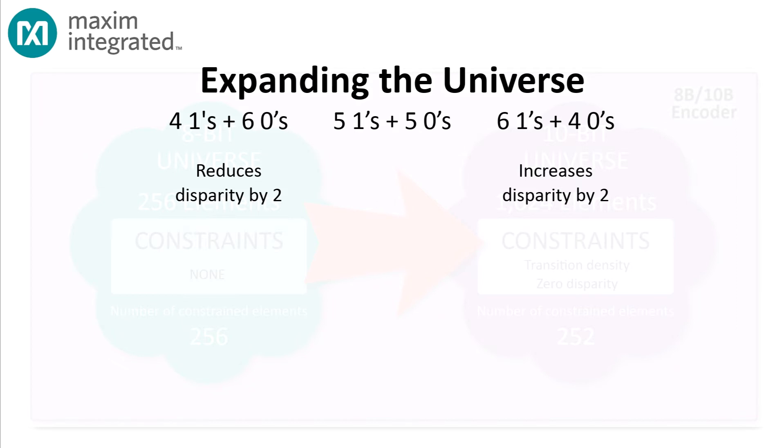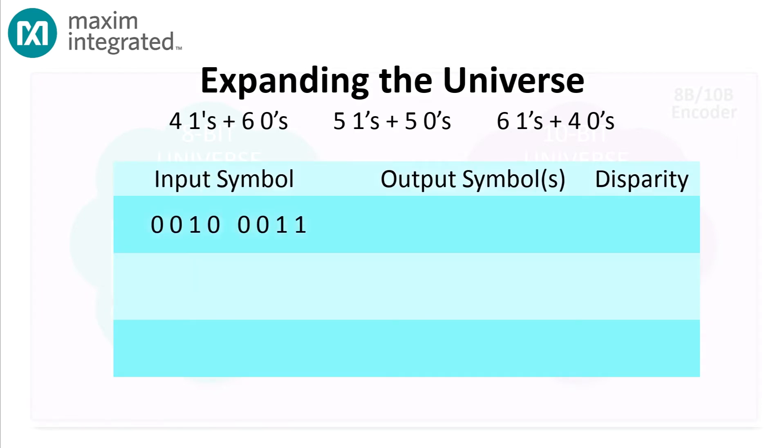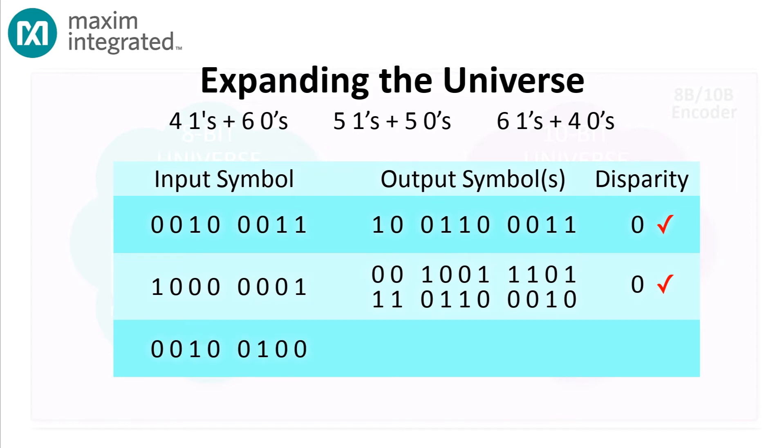The solution is to assign two 10-bit codes to some 8-bit input words. According to the rules of 8B10B, some 8-bit input codes will have just one 10-bit representation. Some 8-bit input codes will have two 10-bit representations, each with 5 1 bits and 5 0 bits.